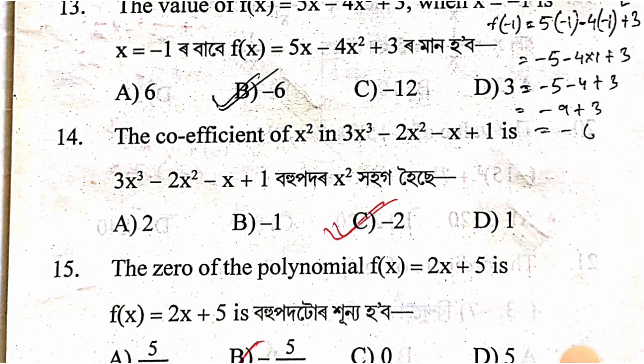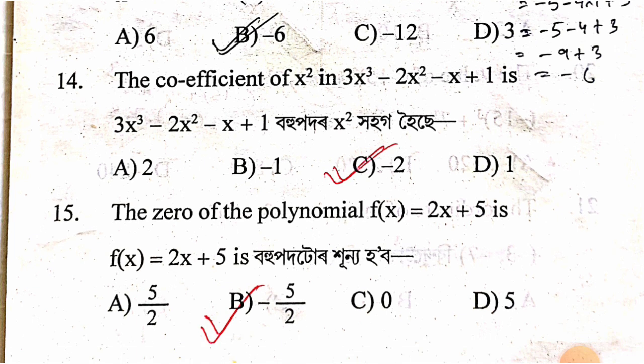The coefficient of x in 3x³ − 2x² − x + 1: the coefficient of x is −1. The answer is option C, which is −2.